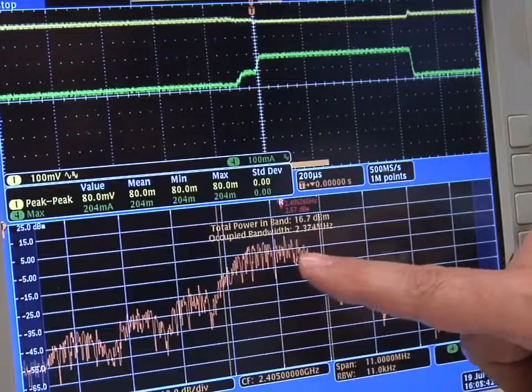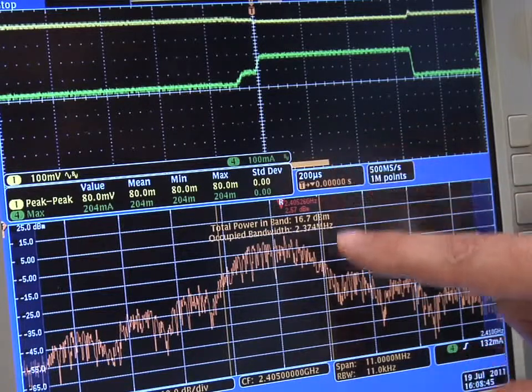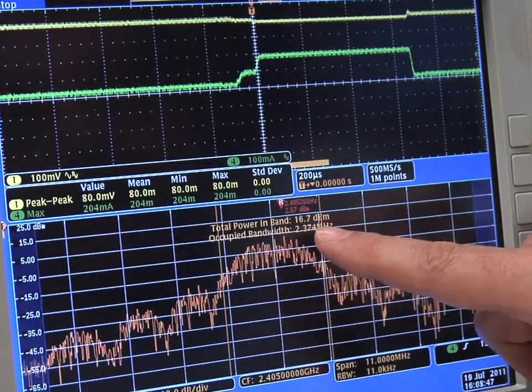Here we see the spectrum during the initial period of the packet. The occupied bandwidth is 2.4 megahertz, which is well within specification, and power at 16.7 dBm, again within specification.